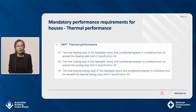For thermal performance, the updated performance requirement H6P1 models the stringency level at seven stars equivalent and simplifies the requirement into three parts: total heating load, total cooling load, and total thermal energy load. The thermal energy load is the sum of the heating and cooling loads. The total heating load, cooling load, and thermal energy load cannot exceed the load limits calculated in accordance with specification 44.